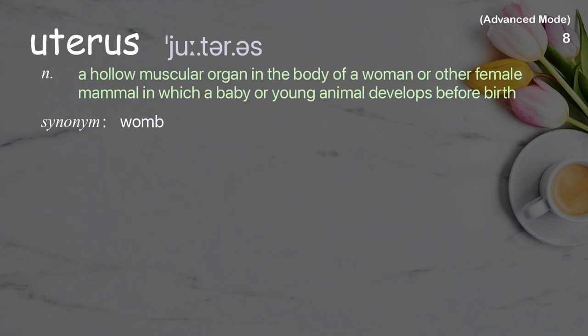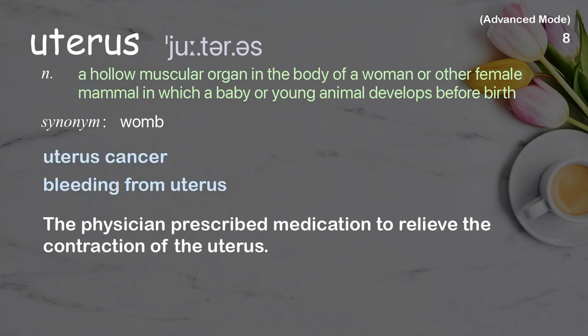Uterus: a hollow muscular organ in the body of a woman or other female mammal in which a baby or young animal develops before birth. Examples: bleeding from uterus. The physician prescribed medication to relieve the contraction of the uterus.